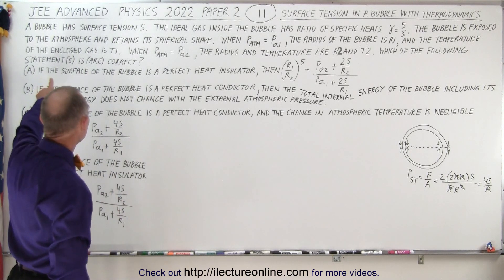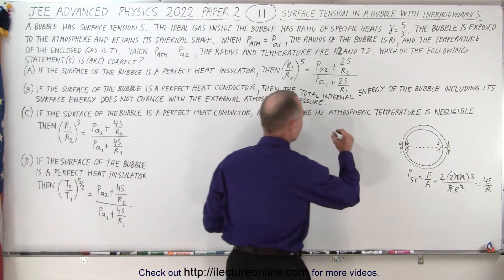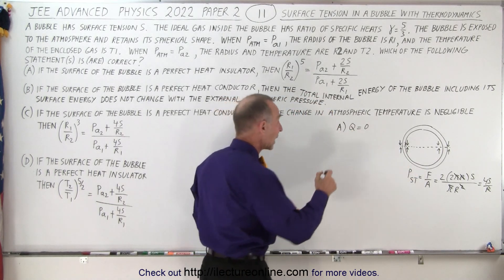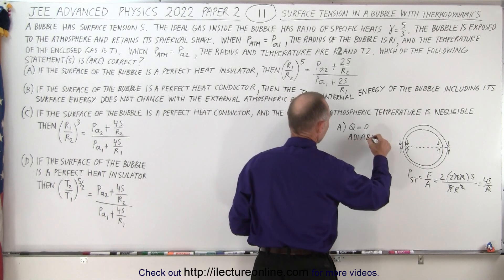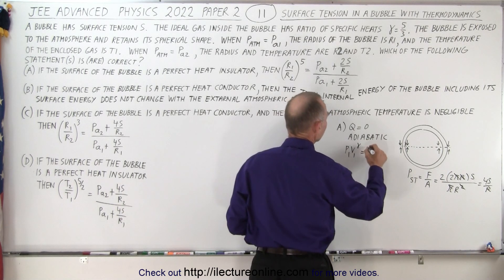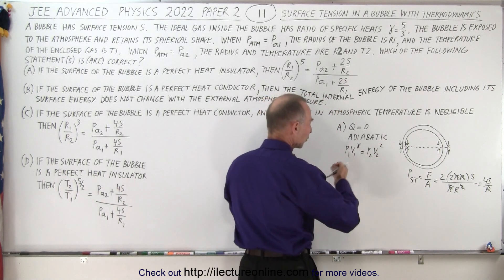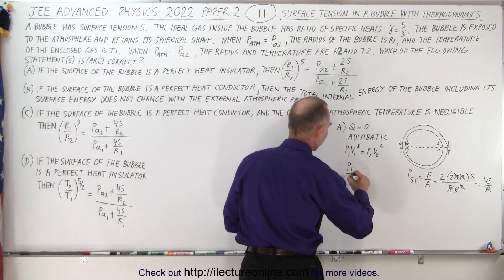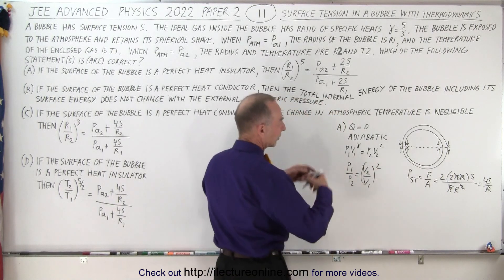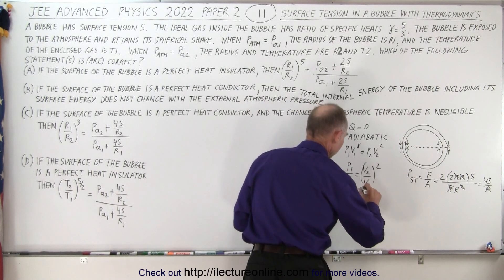For part A, the surface is a perfect heat insulator, so Q equals zero — no heat is exchanged. This makes it an adiabatic process. For an adiabatic process, P1 V1 to the gamma equals P2 V2 to the gamma, giving us a relationship between pressure and volume. So P1 over P2 equals V2 over V1 to the gamma power.